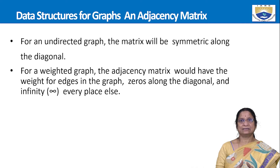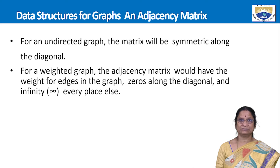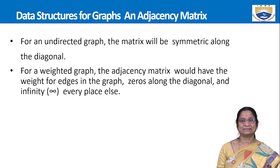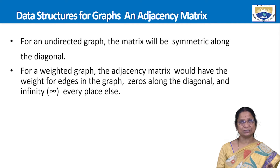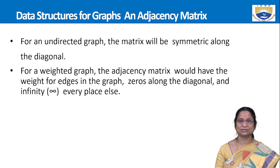Just like all other data structures, a graph must also be represented internally in a system. There are two techniques for graph representation: adjacency matrix and adjacency list. Adjacency matrix uses static allocation — a two-dimensional array. Adjacency list uses dynamic allocation — a linked list. Two vertices are said to be adjacent if there is a direct edge between them.